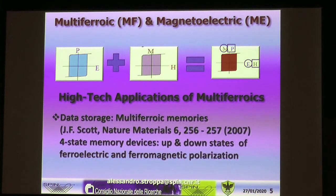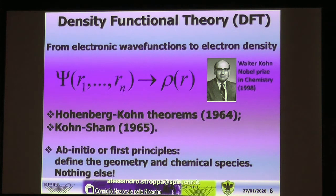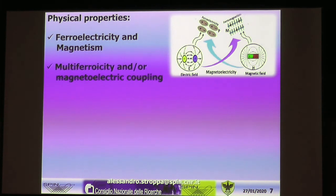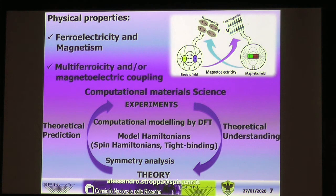For the approach, we use density functional theory: we replace the description of the system from the electron wave function towards the charge density, which is a much easier variable. According to the theorems, this gives a first-principles or ab-initio theory where we define the geometry and chemical species — nothing else. Physical properties of interest are ferroelectricity, magnetism, and eventually multi-ferroelectricity.